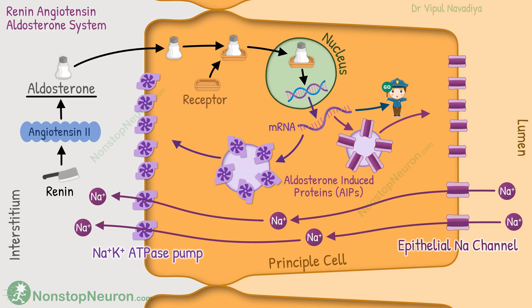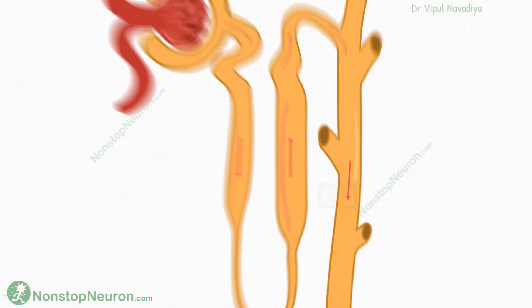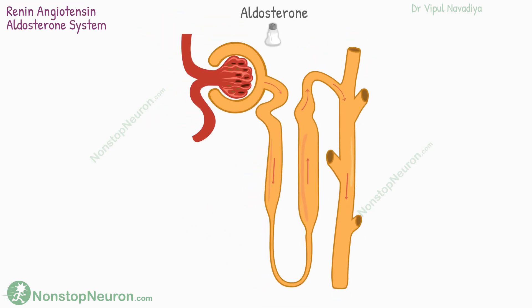Some effect is also seen in the distal tubule, where aldosterone increases the abundance of the sodium-chloride cotransporter, thereby increasing sodium and chloride reabsorption. So this was the effect of the renin-angiotensin-aldosterone system.